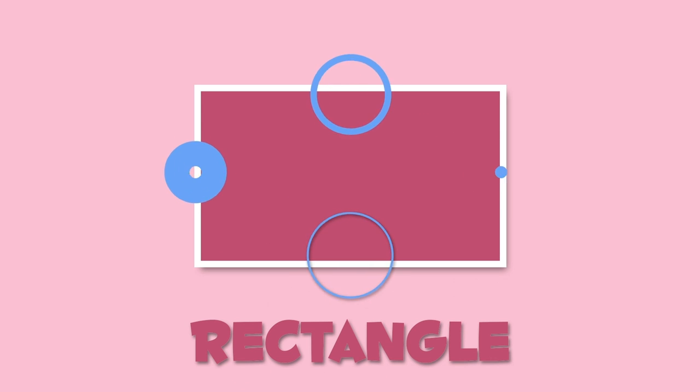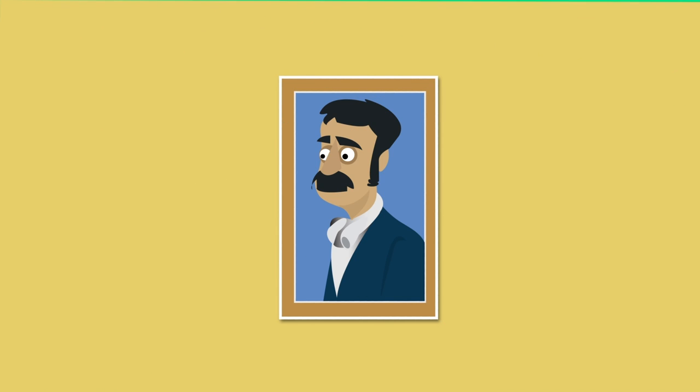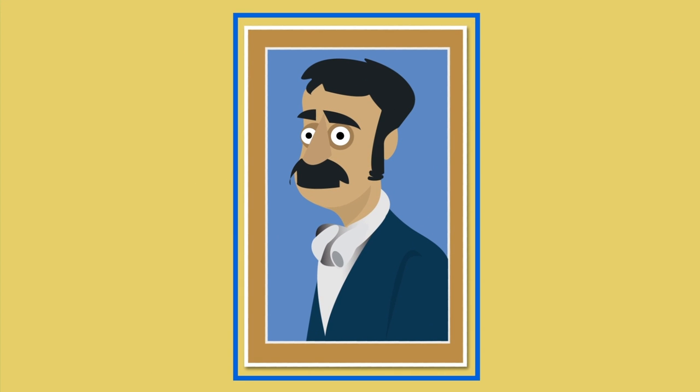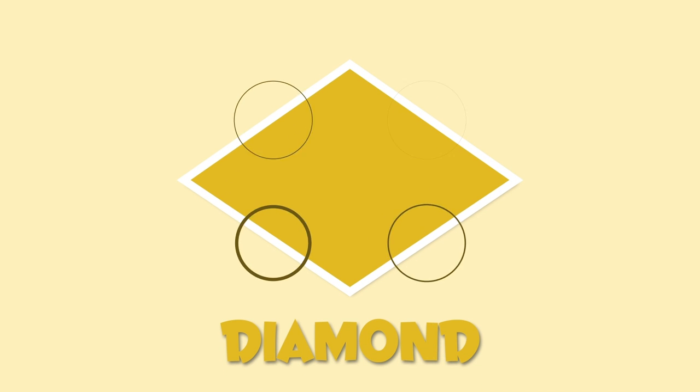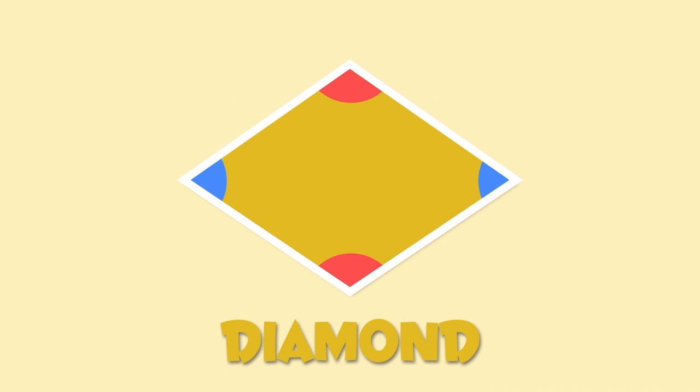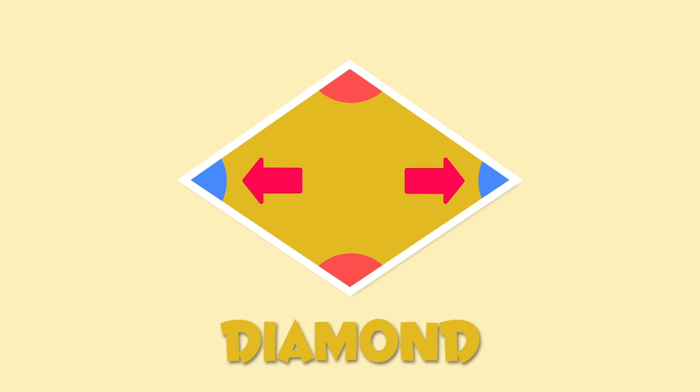This is a rectangle — it has four sides like the square but they're not identical; only its opposite sides are equal in length. A rectangle looks like this bill or this picture frame. This is a diamond shape — its four sides are identical but its angles are not: this one and this one are equal, and so are these two.